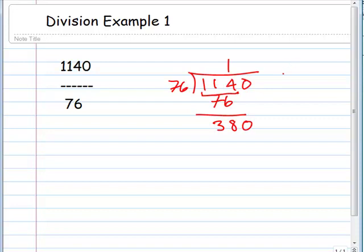76 is about 80, and 8 times 5 is 40, so this is pretty close. Let's see if this will work. 5. 5 times 6 is 30, carry 3. 5 times 7 is 35, plus 3 is 38.